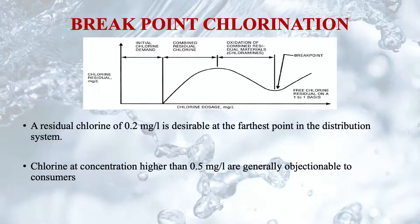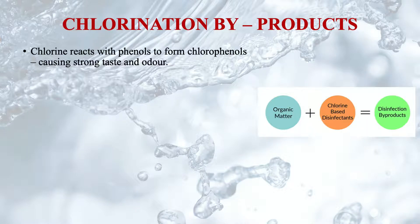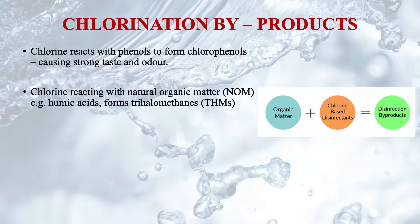The desired dose of chlorine for water treatment is beyond the breakpoint. Typically, dosage may vary from 4 mg/L to 10 mg/L depending upon the raw water quality. A residual chlorine of about 0.2 mg/L is desirable at the farthest point in the distribution system. Chlorine at concentrations higher than 0.5 mg/L are generally objectionable to consumers, therefore the residual chlorine should be restricted to a lower value.